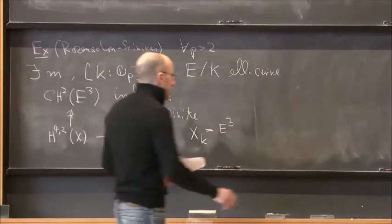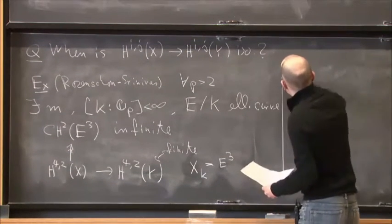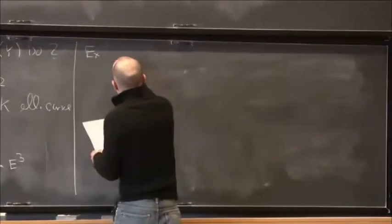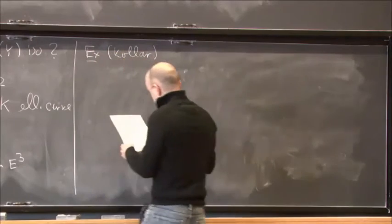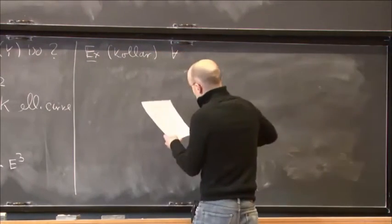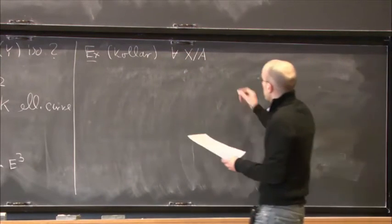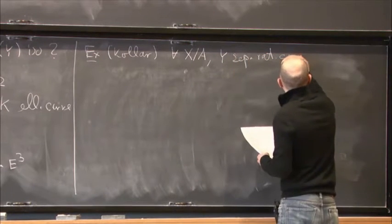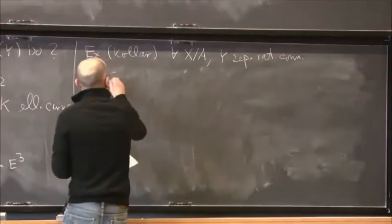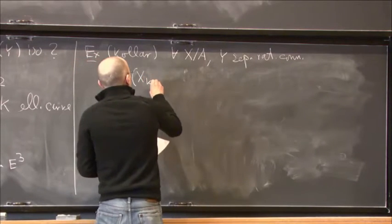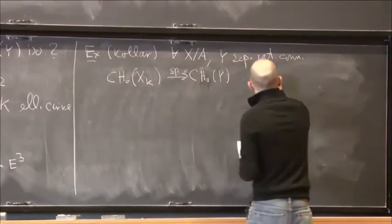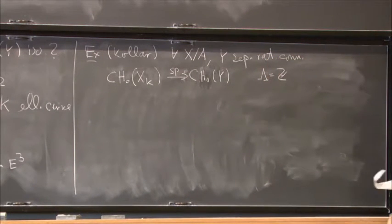Let me give some examples which are positive. The following example is due to Kollár. He shows that for all smooth families as described, such that Y is separately rationally connected, the specialization map from the Chow group of zero cycles of the generic fiber to the Chow group of zero cycles of the special fiber with integral coefficients is an isomorphism.